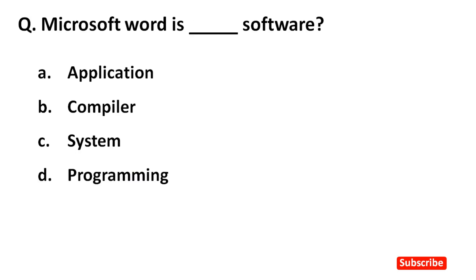Next question. Microsoft Word is a dash software. Right answer is option A — Application.